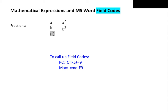For the first example, the fraction a over b, we make sure the cursor is inside the brackets. We type eq, space, and backslash. The field code of every mathematical expression starts this way. For a fraction, we next type f — f for fraction. Type an open parenthesis, and we start our fraction with the numerator a. Type a comma to separate the numerator from the denominator, which happens to be b. Then a closing parenthesis.